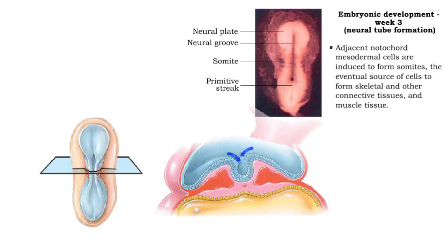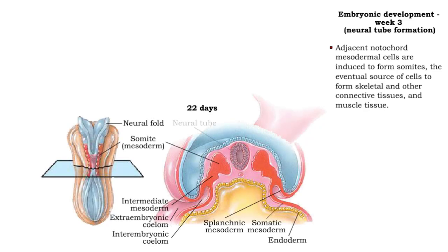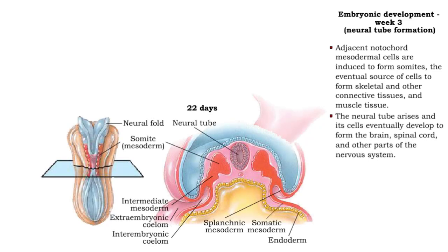The neural groove completely folds inward to form the hollow neural tube. The neural tube arises, and its cells eventually develop to form the brain, spinal cord, and other parts of the nervous system.